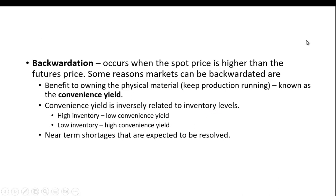Backwardation occurs when the spot price is higher than the futures price. Some reasons markets can be backwardated are a benefit to owning the physical material in order to keep production running — we refer to this as the convenience yield. If we're talking about oil or lithium, which is used in batteries for electric cars and many other things, this convenience yield is inversely related to inventory levels. When you have high inventory levels, there's a low convenience yield. If there's a low inventory, there may be an advantage to buying the commodity now for fear of shortages.